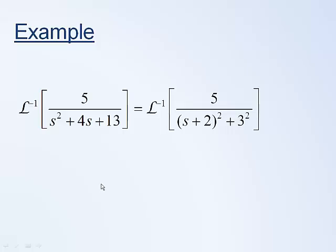If you don't remember how to complete the square, here's a quick reminder. We have a 4 as the coefficient of the s term, so we take 4 and divide by 2 to give 2. We get the quantity (s+2)^2, which when expanded gives s^2 + 4s + 4. That accounts for the first two terms. But we had 13 in the original, not 4, so we need to add 9, which is 3^2. That's how you complete the square.